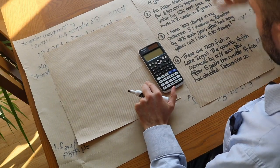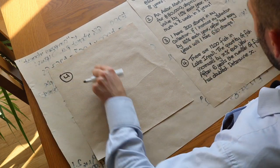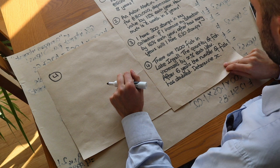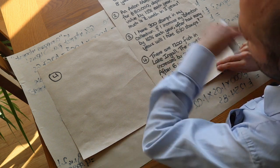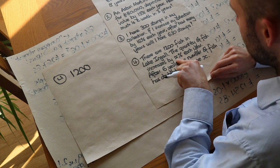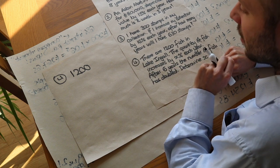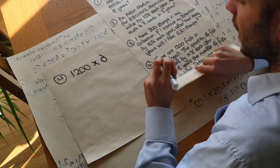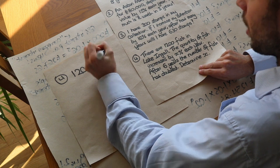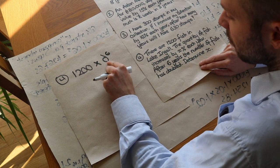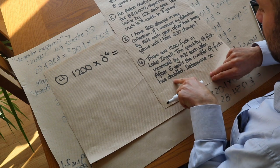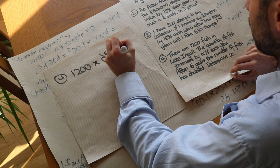This last question has something else missing. There are one thousand two hundred fish in Lake Ingle. The quantity of fish increases by x percent each year, and after six years the number of fish has doubled. We need to determine x. We write: one thousand two hundred times d to the power of six equals two thousand four hundred, where d is the unknown decimal multiplier and six is the number of years.